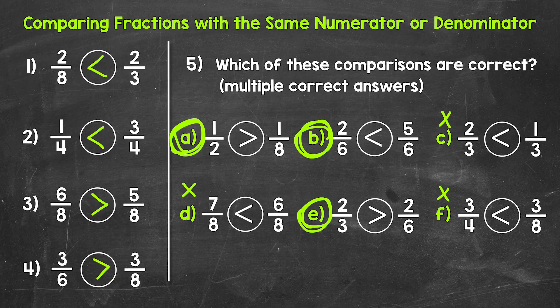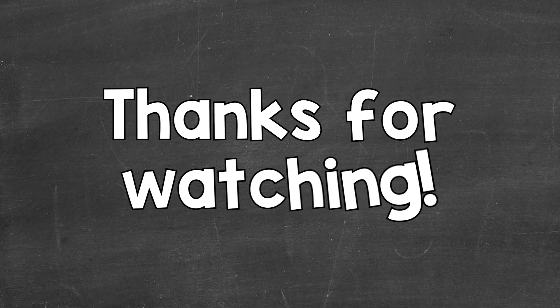Those are the correct comparisons. A: one-half is greater than one-eighth. B: two-sixths is less than five-sixths. And E: two-thirds is greater than two-sixths. So there you have it — that's how to compare fractions with the same denominator and how to compare fractions with the same numerator. I hope that helped. Thanks so much for watching. Until next time, peace.